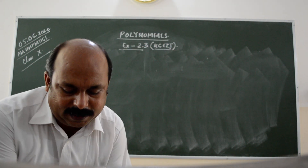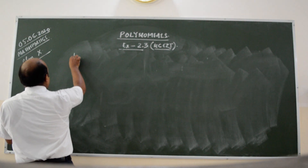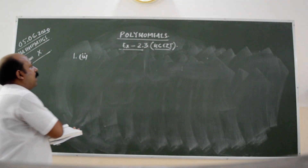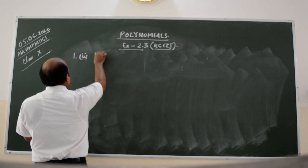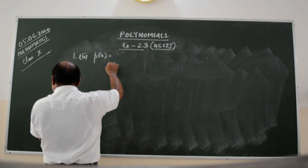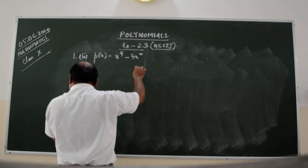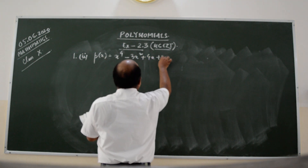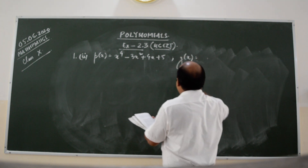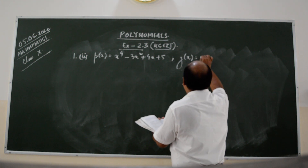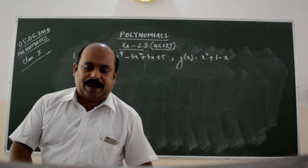Here P of X is given for Question number 1, Part 2. In the same way, we can solve Part 1 and Part 3. We have P of X is equal to X to the power 4 minus 3X squared plus 4X plus 5, and G of X is equal to X squared plus 1 minus X.